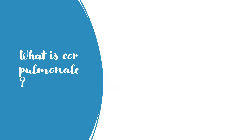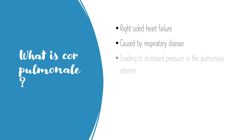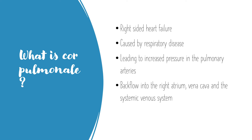Cor Pulmonale is right-sided heart failure — the deoxygenated side of your heart — which is caused by respiratory disease. The respiratory disease leads to an increase in pressure in the pulmonary arteries and backflow into the right atrium, the vena cava and the systemic venous system. In summary, this is chronic pulmonary arterial hypertension.